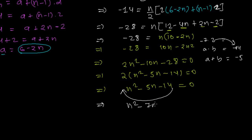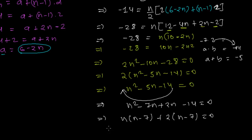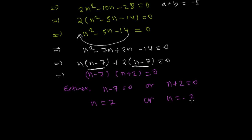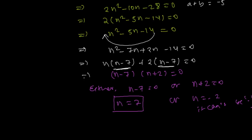So: n² - 7n + 2n - 14 = 0. Taking n common from the first pair: n(n - 7), and 2 common from the second pair: 2(n - 7) = 0. Factoring out (n - 7): (n - 7)(n + 2) = 0. This gives n = 7 or n = -2. Since n is the number of terms, it must be a positive integer, so n cannot be negative. Therefore n = 7.